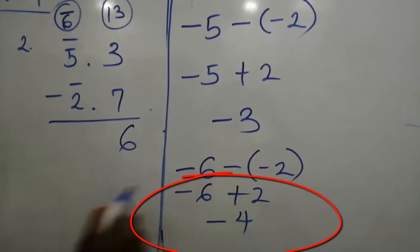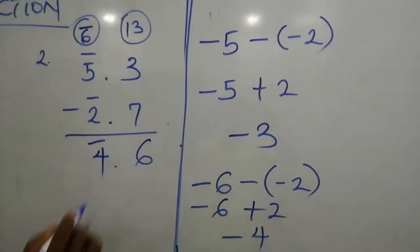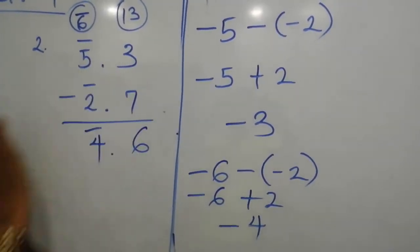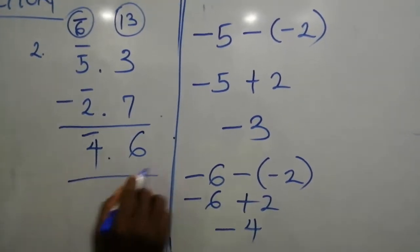Under logarithm, you cannot write minus 4. You will rewrite it as bar 4, 0.6. So, taking bar 2.7 away from bar 5.3 will give us bar 4.6.